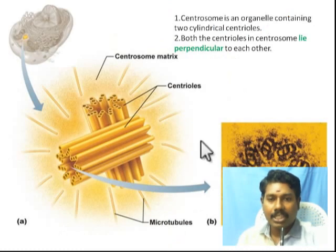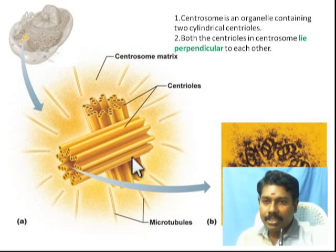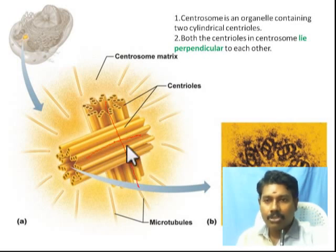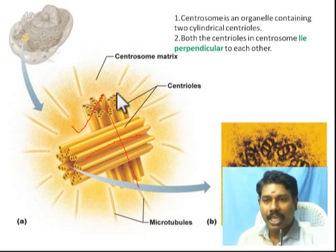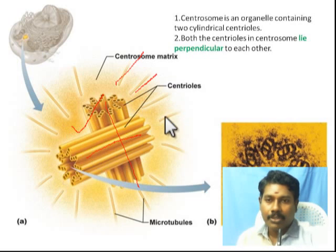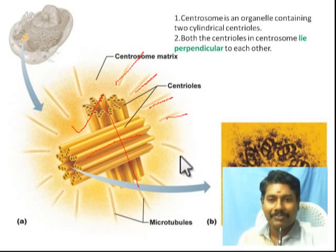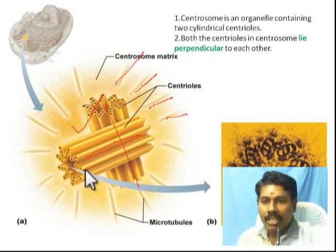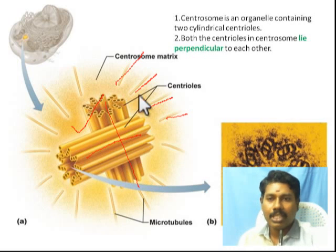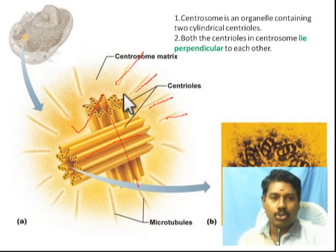Inside the centrosome, the centrioles lie perpendicular to each other. There are many amorphous pericentriolar materials around them. On the outside, you can see many tubules lying outward, facing outward - these are the microtubules. These microtubules extend outside. In the center, you can visualize the amorphous pericentriolar materials. This is all about centrosomes.